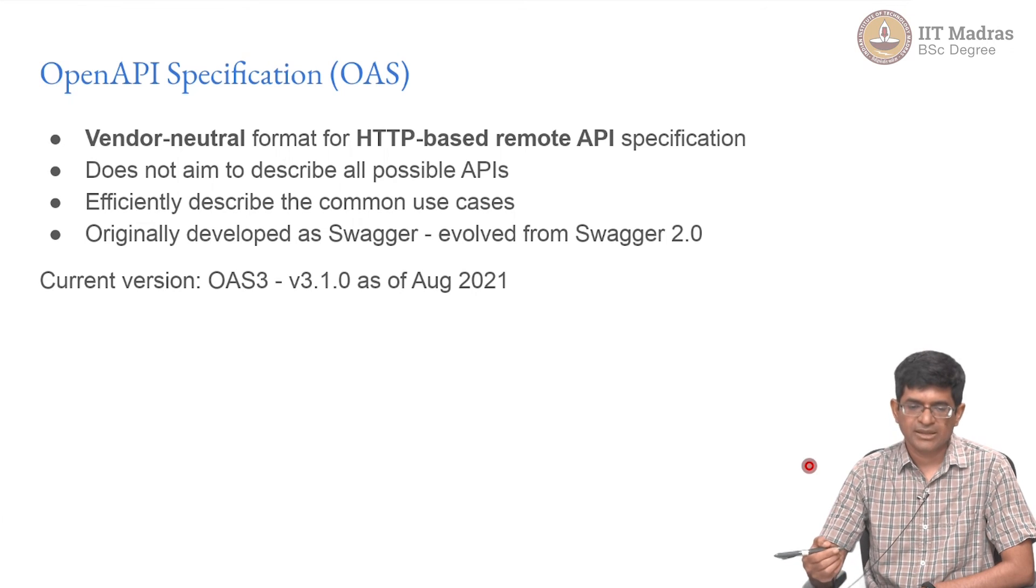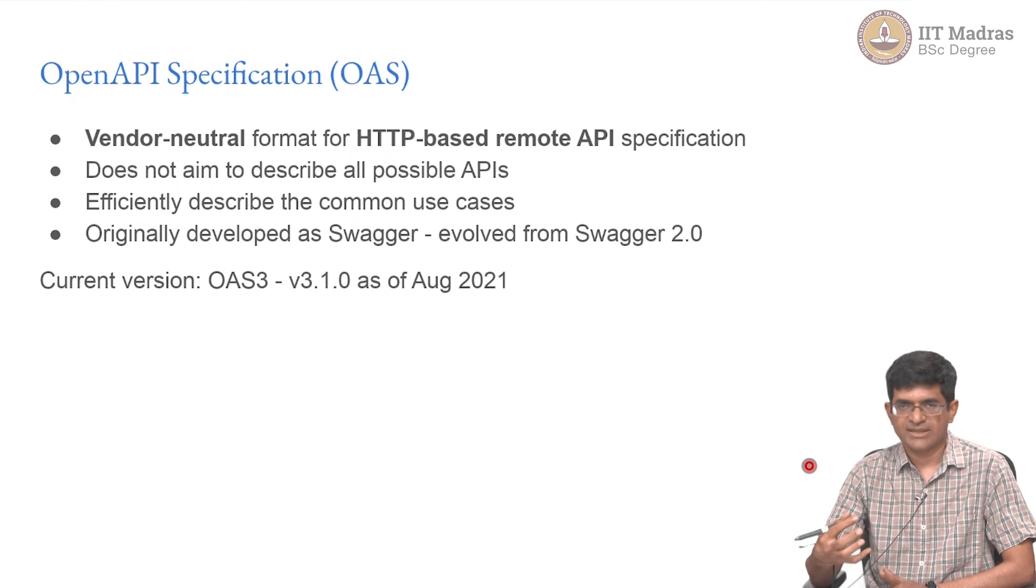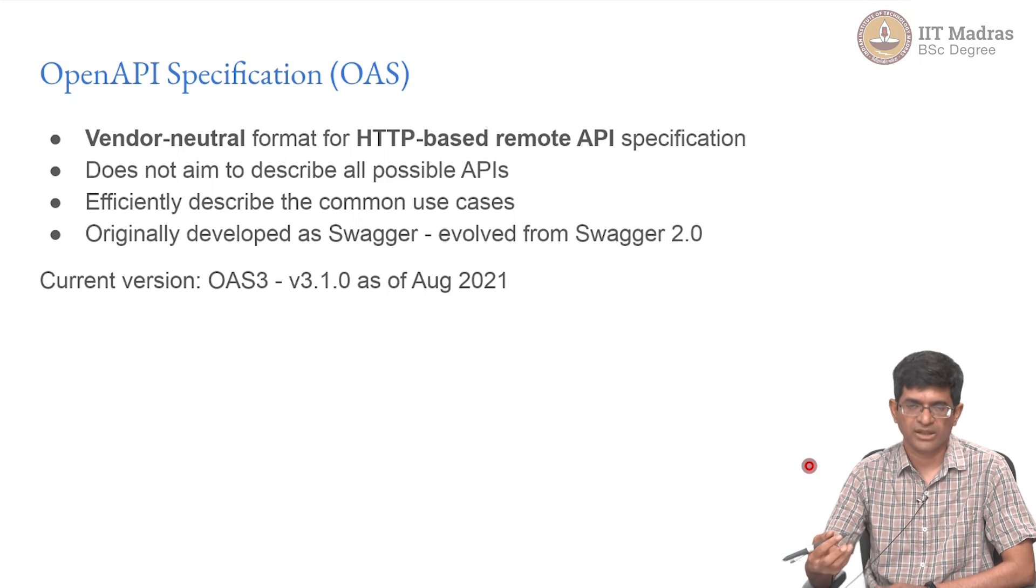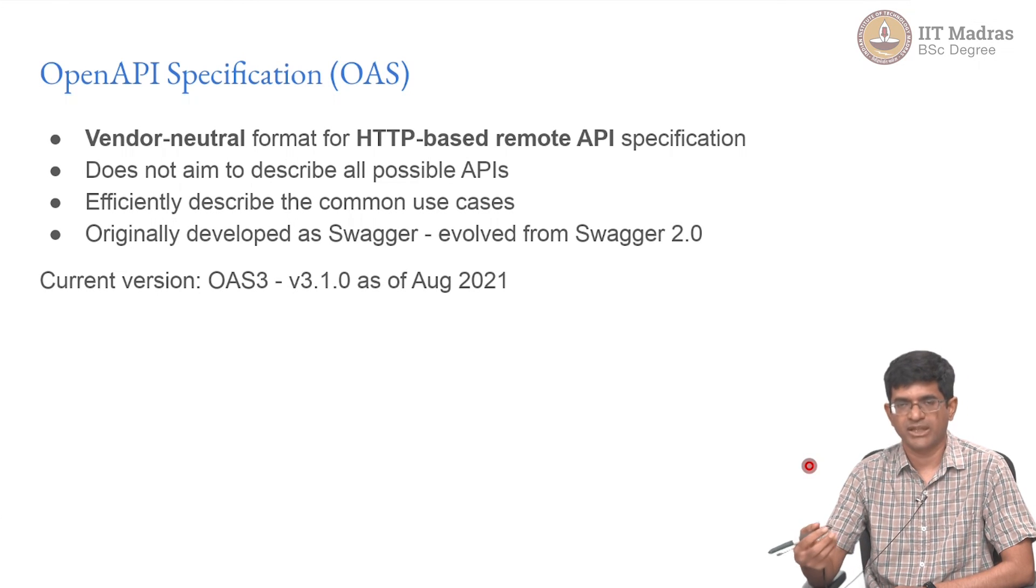This OAS has a very nicely descriptive webpage that gives the background information about why the specification came up, what is the motivation, what are examples that you can use to understand and so on. One thing they make very clear is they do not aim to describe all possible APIs, and that is important because you are not trying to, for example, describe Java APIs or C APIs - you are restricting yourself to HTTP-based remote APIs. And they decided that let us focus on describing the common use cases for a web type application rather than everything that can be done for any kind of remote procedure call.